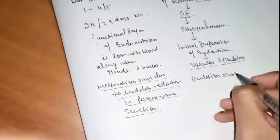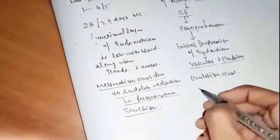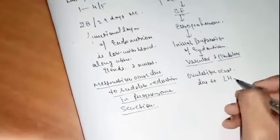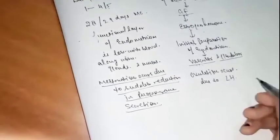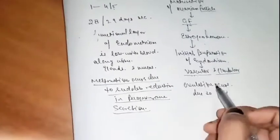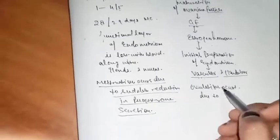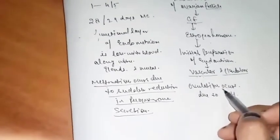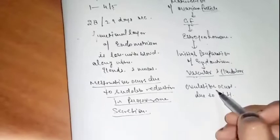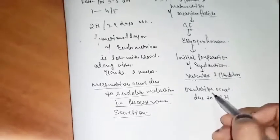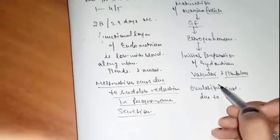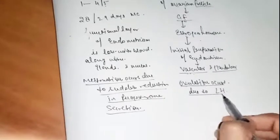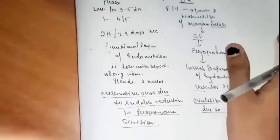Ovulation occurs due to the luteinizing hormone. This is also a very important and frequently asked NEET question: ovulation occurs due to the luteinizing hormone.